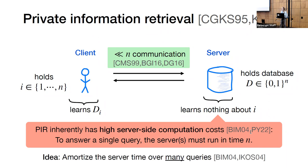Fortunately, this isn't the end of the road, because prior work has shown that we can hope to amortize this linear server time over many queries. In other words, in the many-query setting, we can hope to build PIR schemes with sublinear amortized per-query server time.